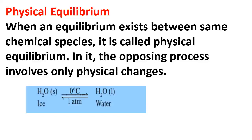An example of physical equilibrium is the change from ice to water. When ice changes to normal water, the process is referred to as melting, because ice is the solid form of water and water is the liquid form. Such an equilibrium is a physical equilibrium — it involves only one physical change, a change that you can see.